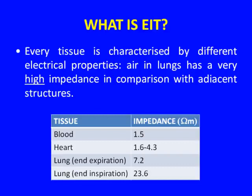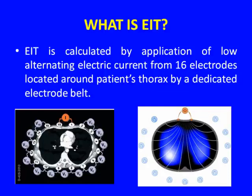From a physician's point of view, in the thorax there are different tissues with different electrical properties, and air in lungs has a very high impedance to electricity. Starting from this concept, EIT applies alternating electric current from 16 electrodes placed around the patient's thorax with a belt. Current is applied between two electrodes while the rest of the electrodes register the signal coming from this current.